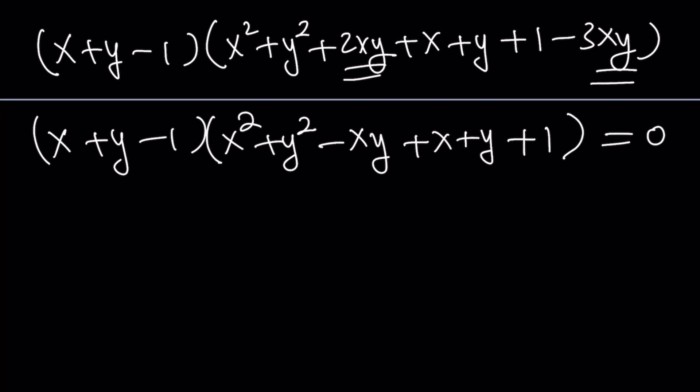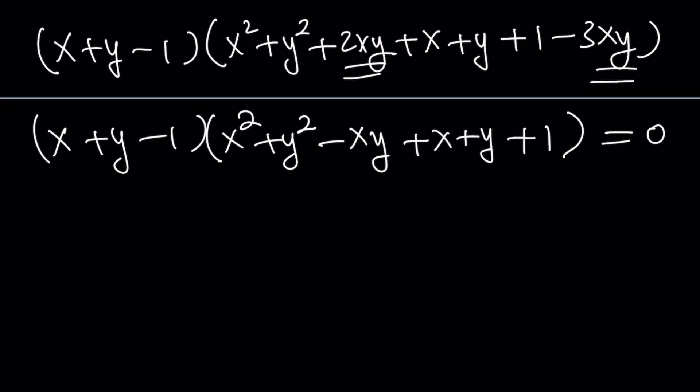What am I going to do with these factors? Set each one equal to 0. This one is fairly easy, so we're going to deal with that later. Let's set this factor equal to 0. When you set that equal to 0, you get x squared plus y squared minus xy plus x plus y plus 1 equals 0.